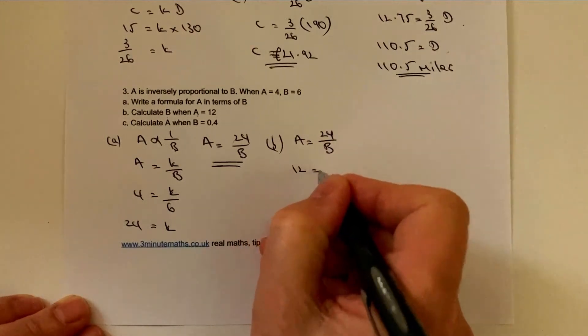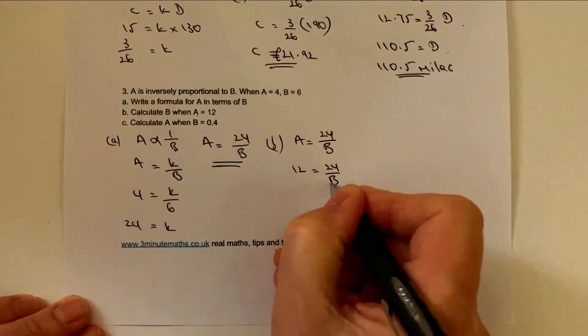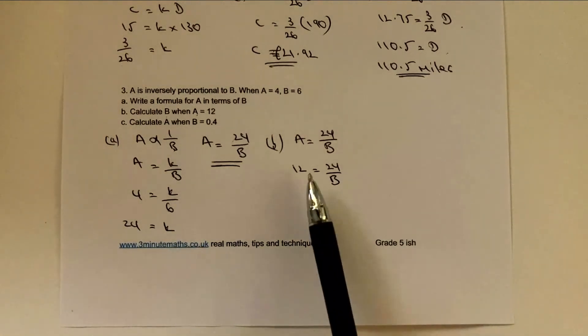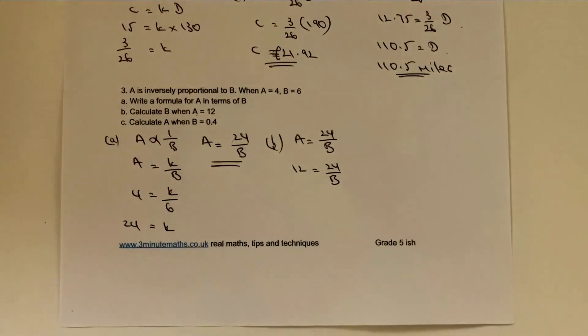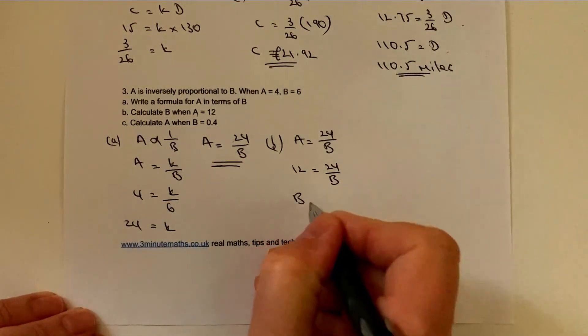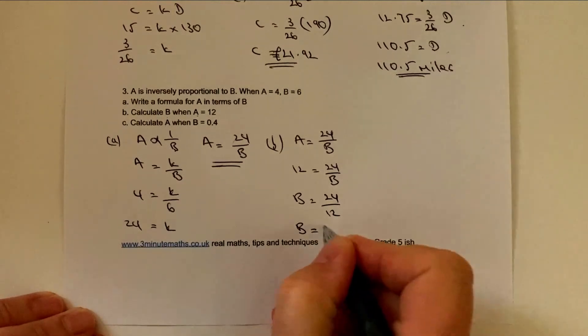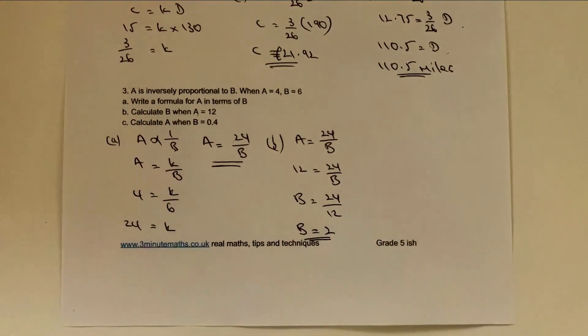Slightly different. 12 equals 24 over B. Well, a little bit of algebra manipulation needs to go on there. But basically it culminates in swapping these two around. And I get B equals 24 over 12. So therefore B equals 2. And that's the answer to part B.